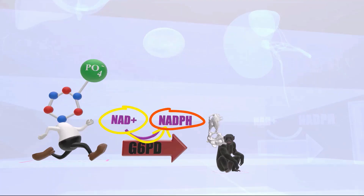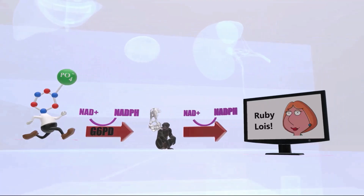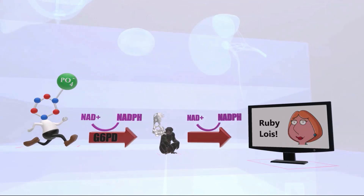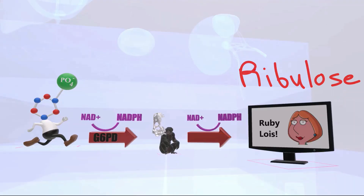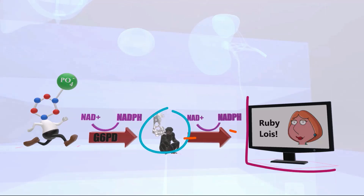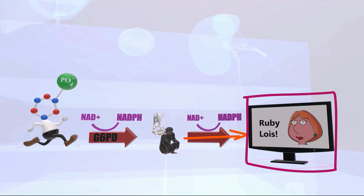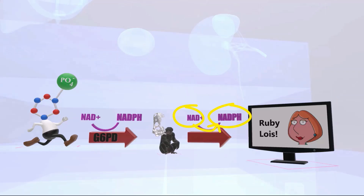Next, 6-phosphogluconate is converted to ribulose-5-phosphate, represented here as the 'ruby Lois show' — 'ruby' for ribulose. Again, NAD⁺ is reduced to NADPH in this step. That completes the irreversible oxidative phase.